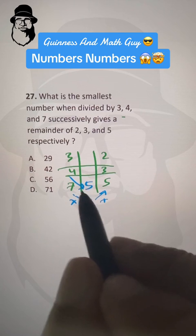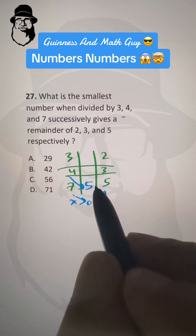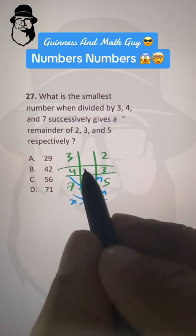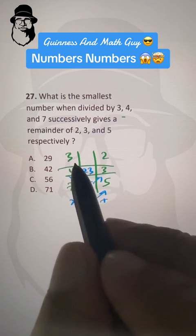Again, 4 times 5 is 20, plus 3 is 23. And then same process.